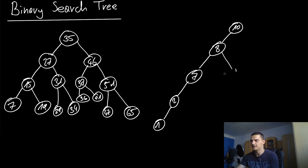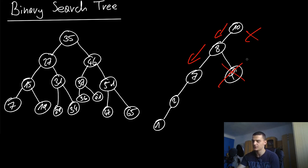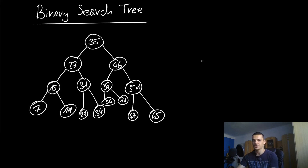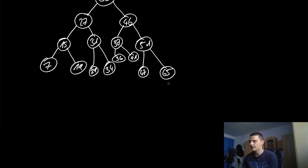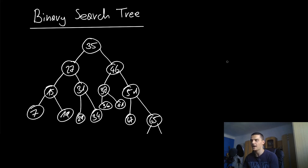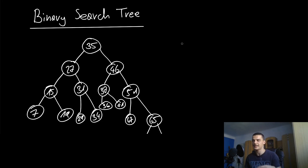Even with just one extra element like 9, going left still only excludes one element at a time — you're not halving the problem size, so there's no logarithmic runtime. On average, most trees will be somewhat balanced and give logarithmic complexity. But in the worst case — a path or very unbalanced tree — you get linear runtime. If you can guarantee the tree stays balanced, you always get logarithmic complexity, which is why we'll look at self-balancing trees in the next tutorials.